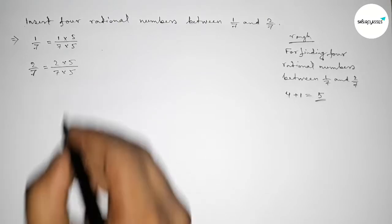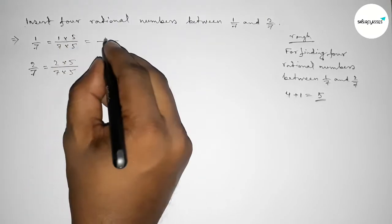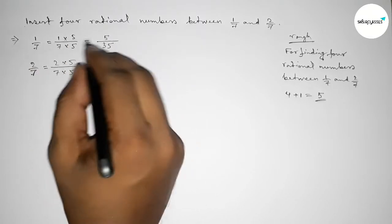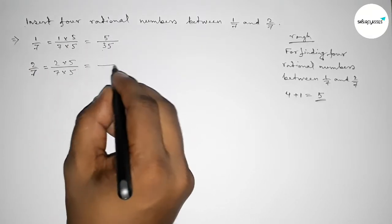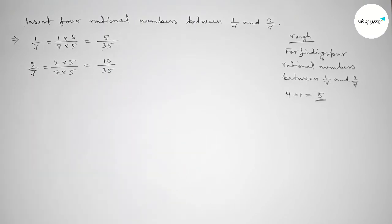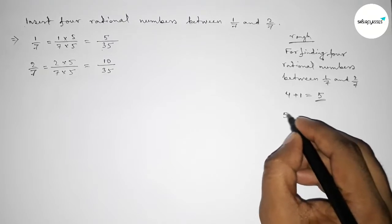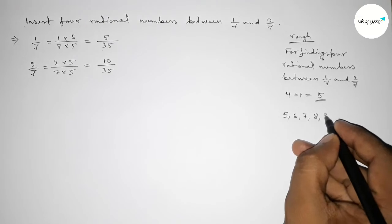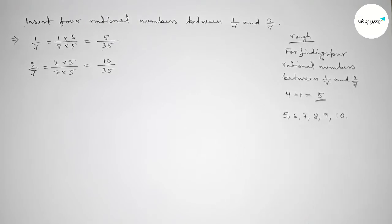By this way, here 1 over 7 into 5 and 7 into 5. Similarly here 2 into 5 and 7 into 5. So this is 5 over 35 and this is 10 over 35, and these are our equivalent fractions.